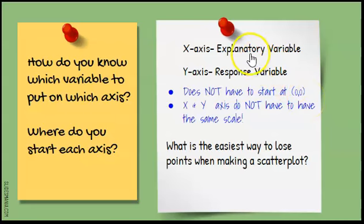In fact, I encourage you to look at your smallest value for your explanatory and your highest value, and that can help you judge your scale. Same thing with response variable. X and y-axis do not have to have the same scale. In fact, usually they don't. But you have to label. The easiest way to lose points when you make a scatterplot is don't label both axes.